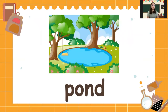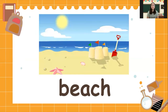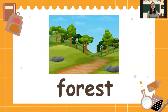For example, here we have pond. Again please, pond. Hill. Again please, hill. Beach. Again please, beach. Forest. Again please, forest.